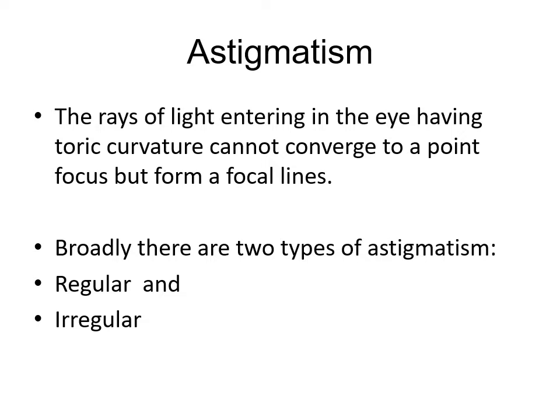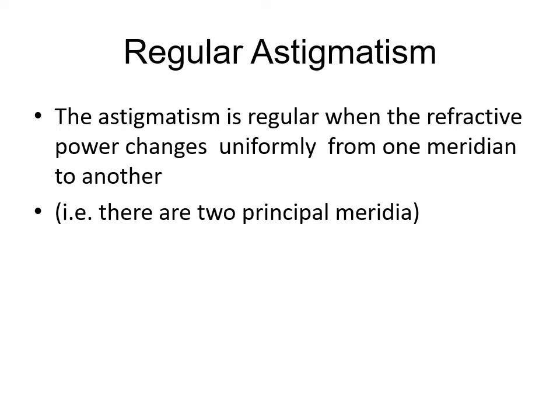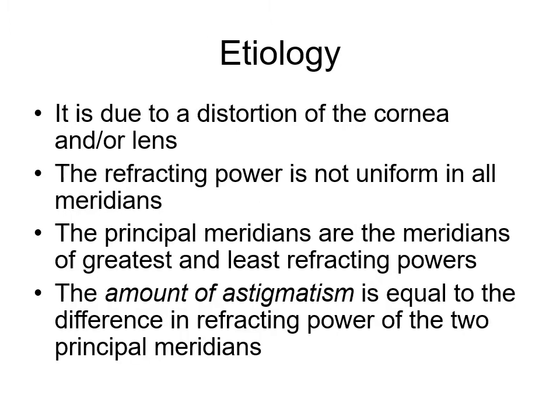Broadly there are two types of astigmatism: regular and irregular. Regular astigmatism is when the refractive power changes uniformly from one meridian to another, and there are two principal meridians. The etiology is due to distortion of the cornea or lens, where the refractive power is not uniform in all meridians. The amount of astigmatism equals the difference in refractive power of the two principal meridians.